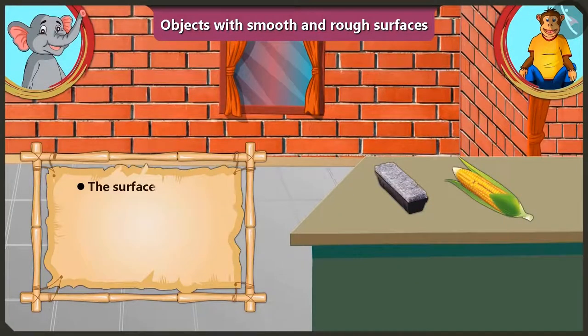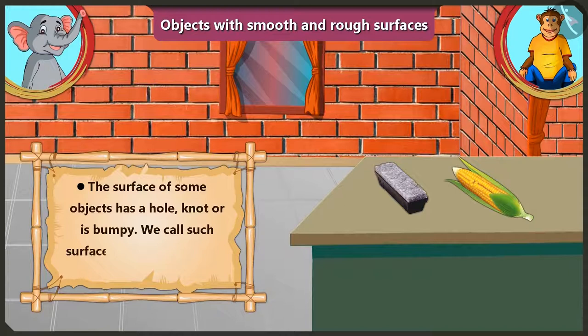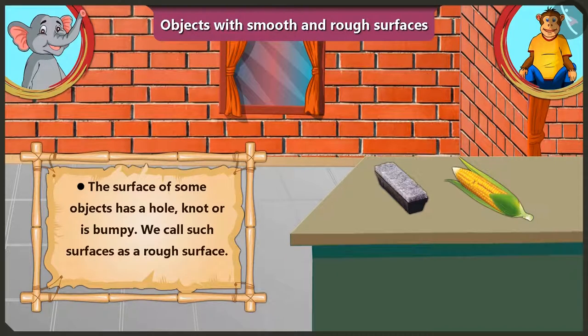Appu, when the surface of an object has a hole, knot, or if it is bumpy, we call that surface a rough surface. Our hand cannot slide on it easily.